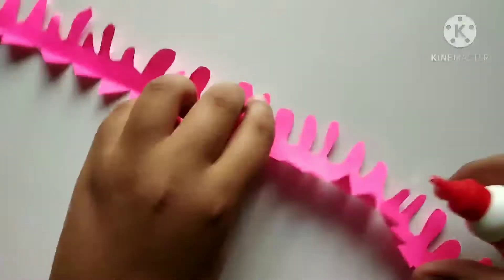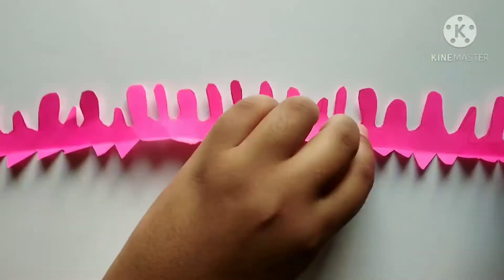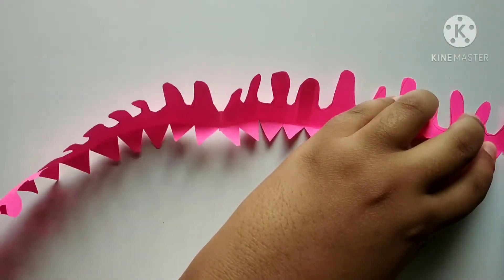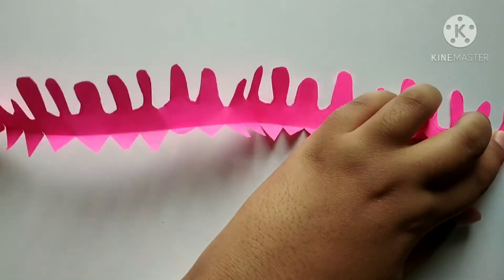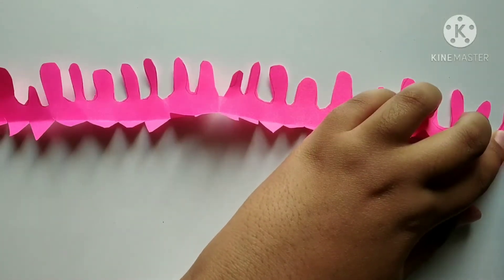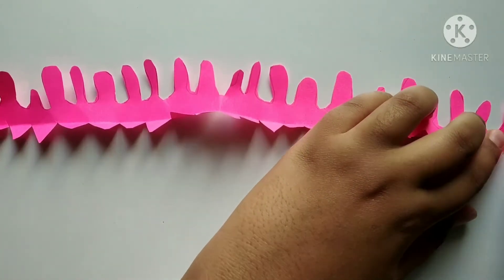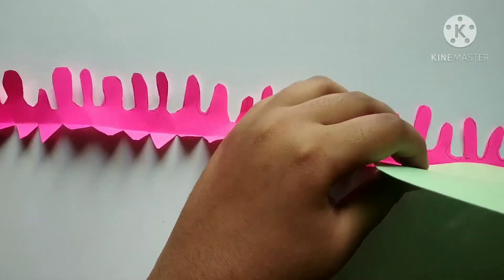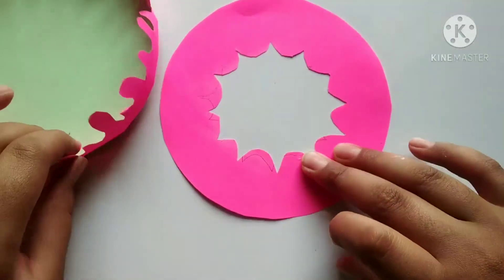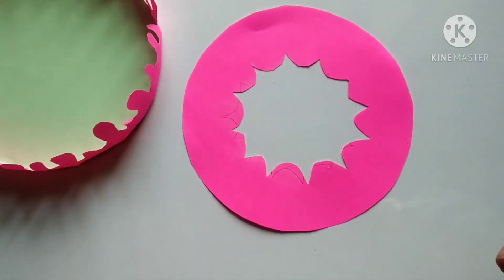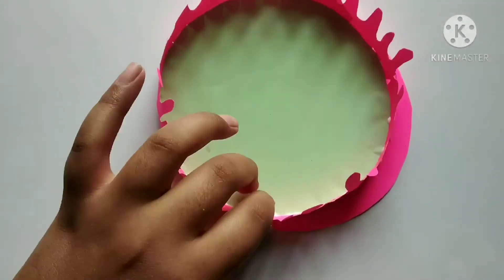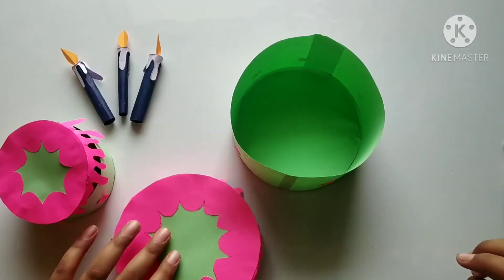Now we need to take glue and stick with the circle all the way around. Friends, now we need to take the design paper, apply glue, and stick it here.